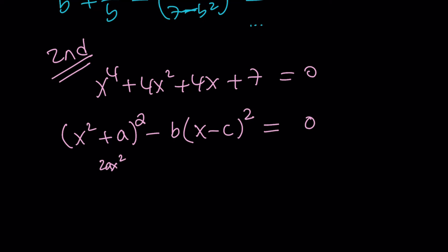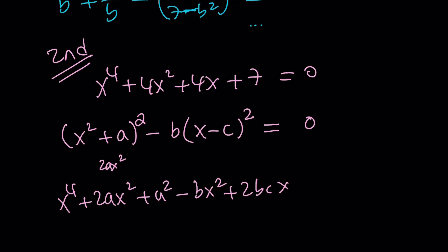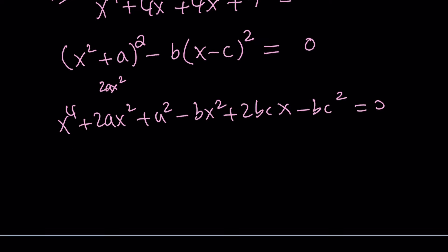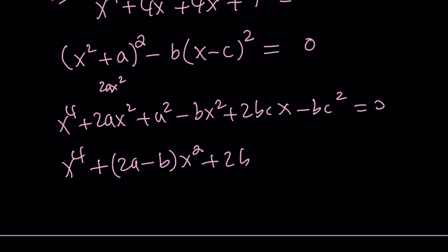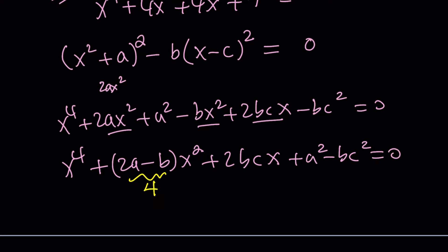So we get x to the fourth plus 2ax squared plus a squared, and then minus bx squared plus 2bcx, and then plus a squared minus bc squared equals 0. Comparing this to our expression, this is 2a minus b times x squared, and then we have 2bcx. And then plus a squared minus bc squared equals 0. This is supposed to be 4 and this is supposed to be 4.